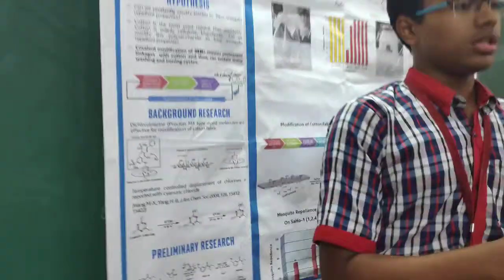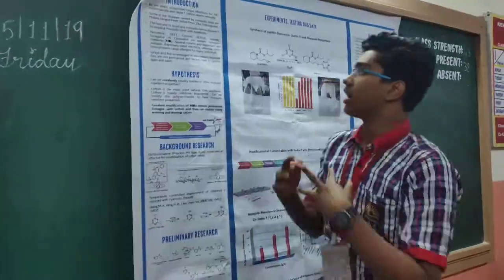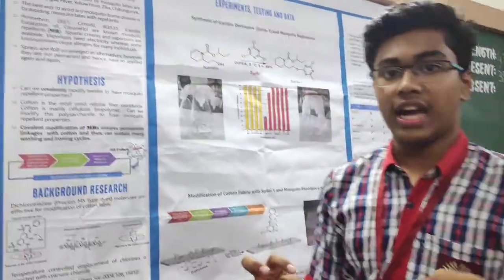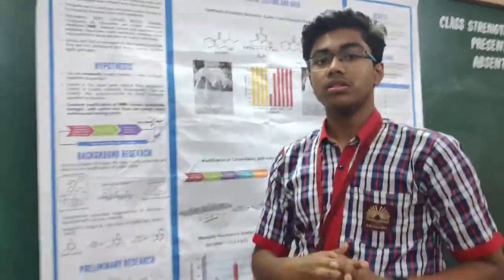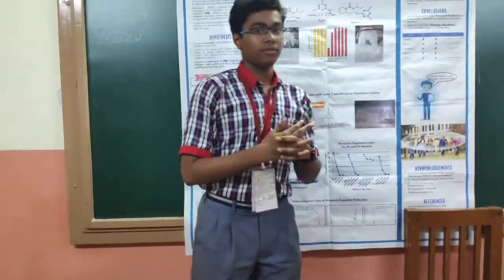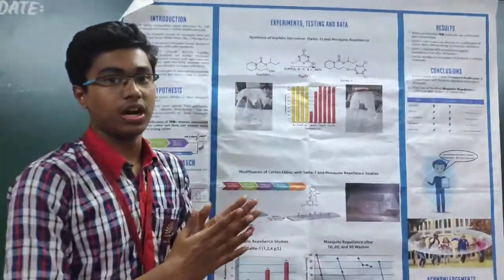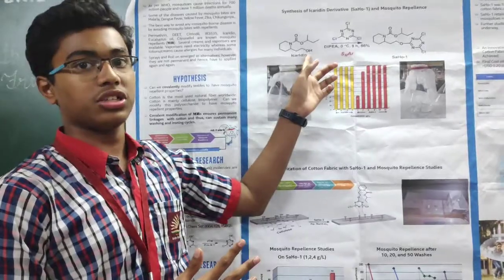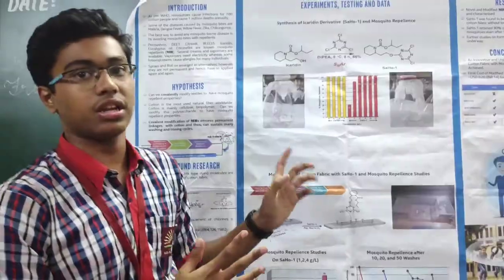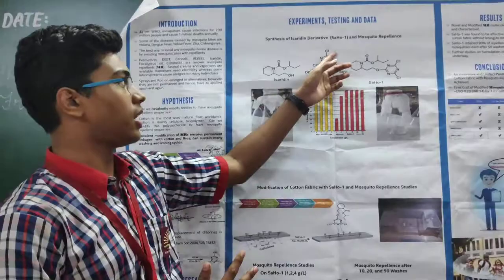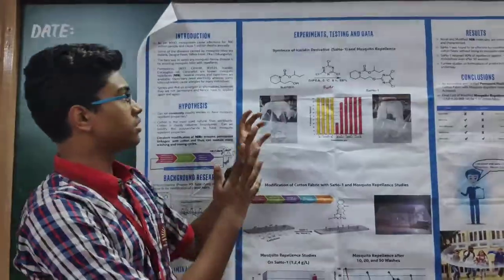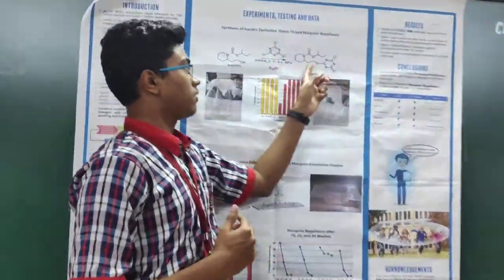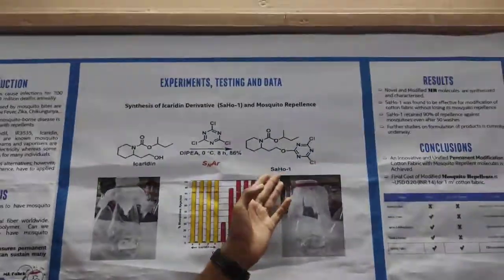Similarly, I thought about modifying a mosquito repellent molecule such that it can be attached to cotton cloths through dyeing processes. I took a compound called icaridin as the mosquito repellent. I chose this because it has an OH group — a hydroxyl group — which helps in bonding with cyanuric chloride. Cyanuric chloride is the compound used to bond with cotton cloths. After reacting, the product came out to be icaridin tri-V, and I named it SAHO-1.